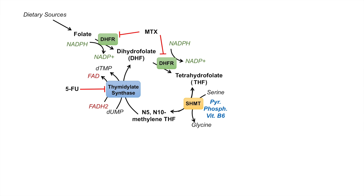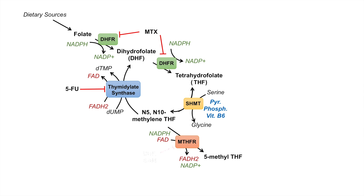If the cell does not require dTMP, N5,N10-methylene tetrahydrofolate can be utilized by the enzyme methylene tetrahydrofolate reductase, or MTHFR, which processes it to 5-methyl tetrahydrofolate. This enzyme uses NADPH as an electron donor and reduces FAD to FADH2. MTHFR is inhibited by a couple of products: one is dihydrofolate from this pathway, and another is SAM, or S-adenosylmethionine, from a related pathway.